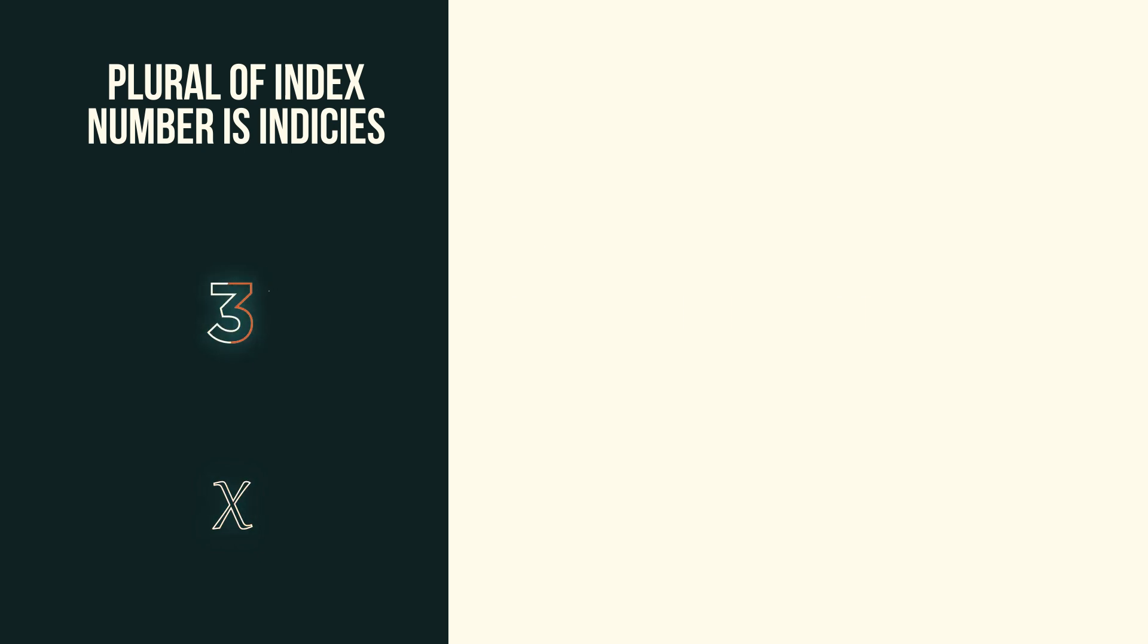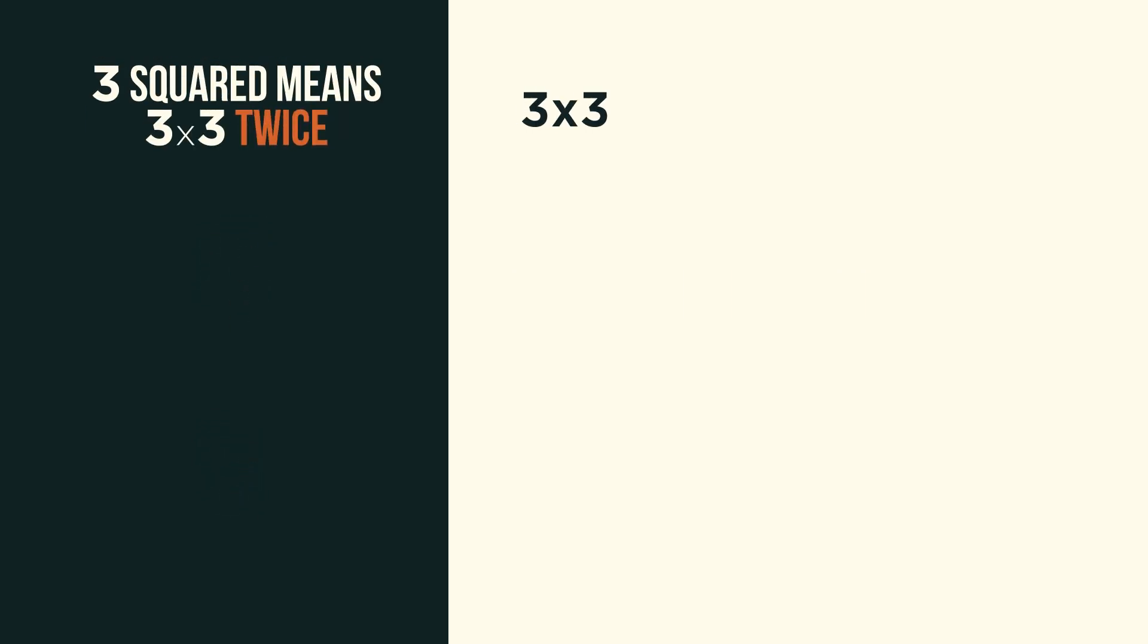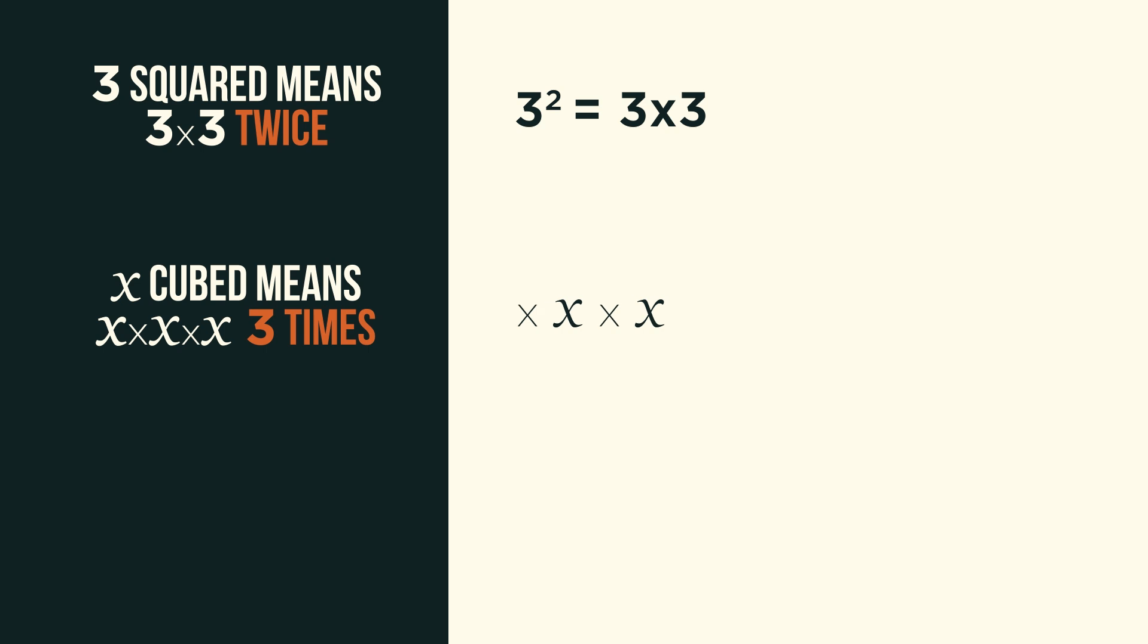So 3 squared means 3 multiplied by 3, twice. x cubed means x multiplied by x multiplied by x, so 3 times.